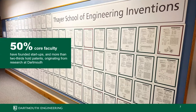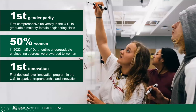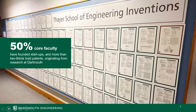Some things we're very proud of at Dartmouth Engineering: we were one of the first comprehensive research universities to reach gender parity in undergraduate engineering. In 2023, Dartmouth Engineering was one of three schools nationwide to earn the highest distinction from the ASEE for significant progress in diversity, equity, and inclusion goals. Dartmouth Engineering is also home to the nation's first doctoral-level PhD innovation program, where students receive funding and support to launch their own startups. More than 50% of core faculty have founded startups, and more than two-thirds hold patents originating from research at Dartmouth.